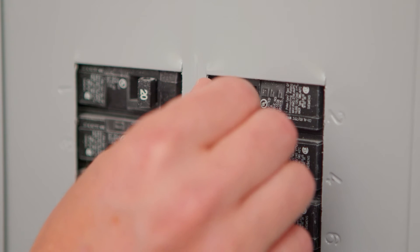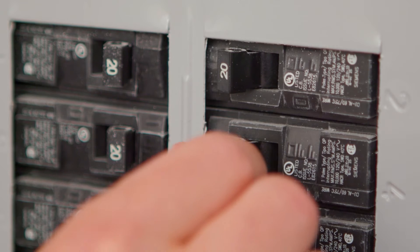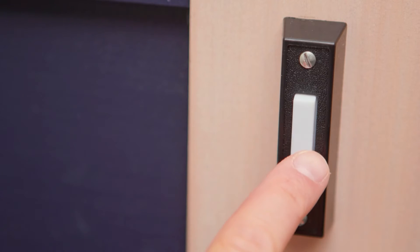First, switch the power off for your doorbell at the circuit breaker. To locate the correct circuit breaker switch, try turning off each switch one at a time and pressing your doorbell to hear if it rings.